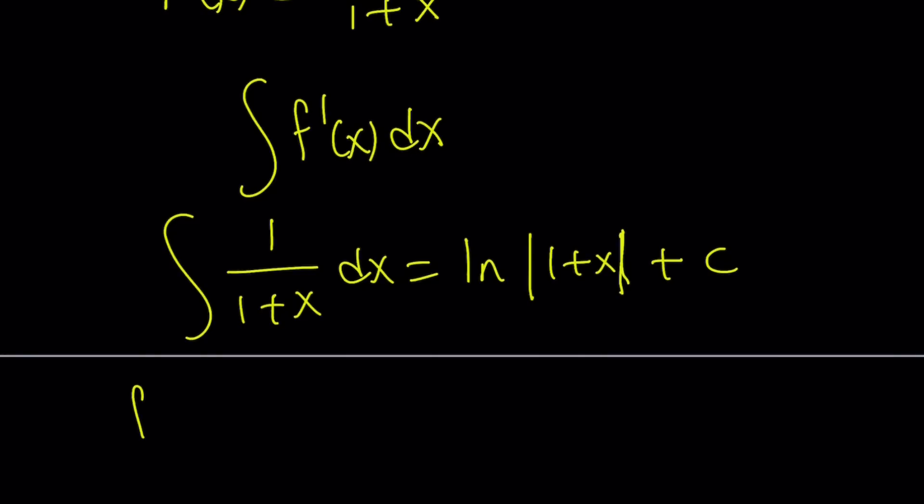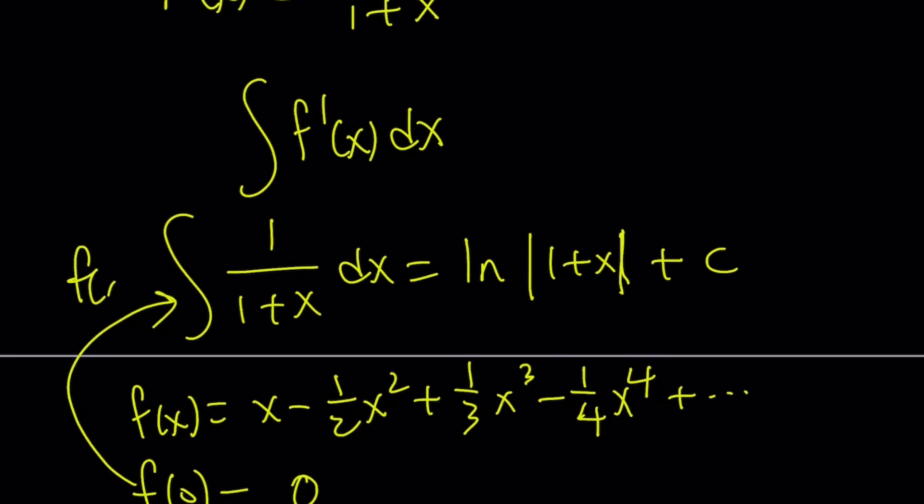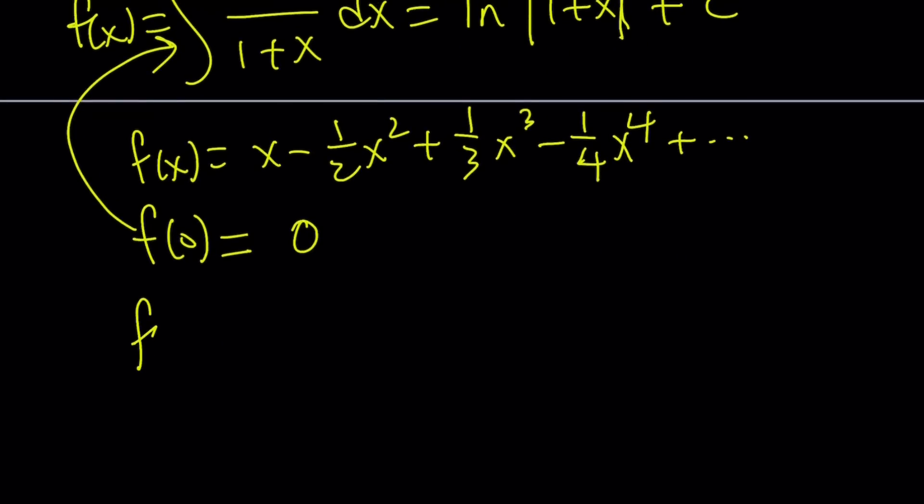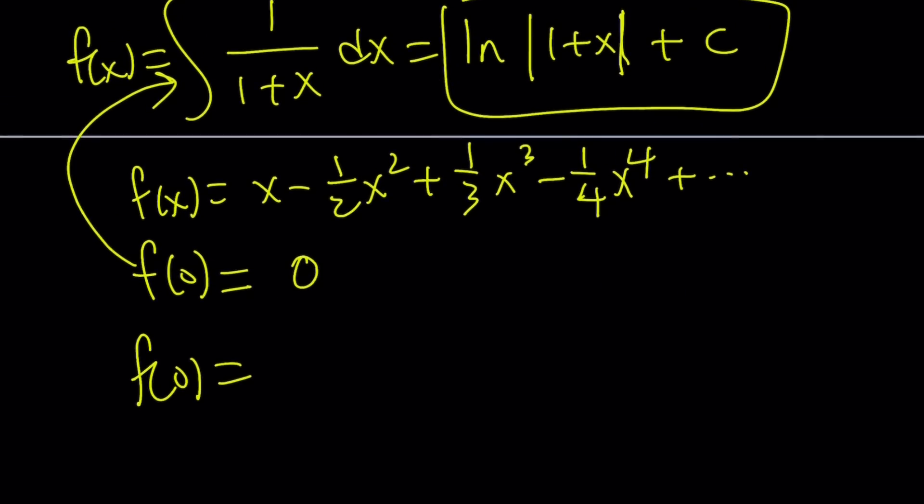Remember, f(x) was defined as x minus 1/2 x squared plus 1/3 x cubed minus 1/4 x to the fourth plus dot dot dot. Now, if you replace x with 0, since we only have powers of x, f(0) is going to be 0. Let's plug it in here. By the way, this is f(x). So f(0) is going to be ln 1 plus 0, which is ln 1 plus c. But ln 1 is 0, so it's just c. But we know that f(0) is 0, so c is equal to 0.